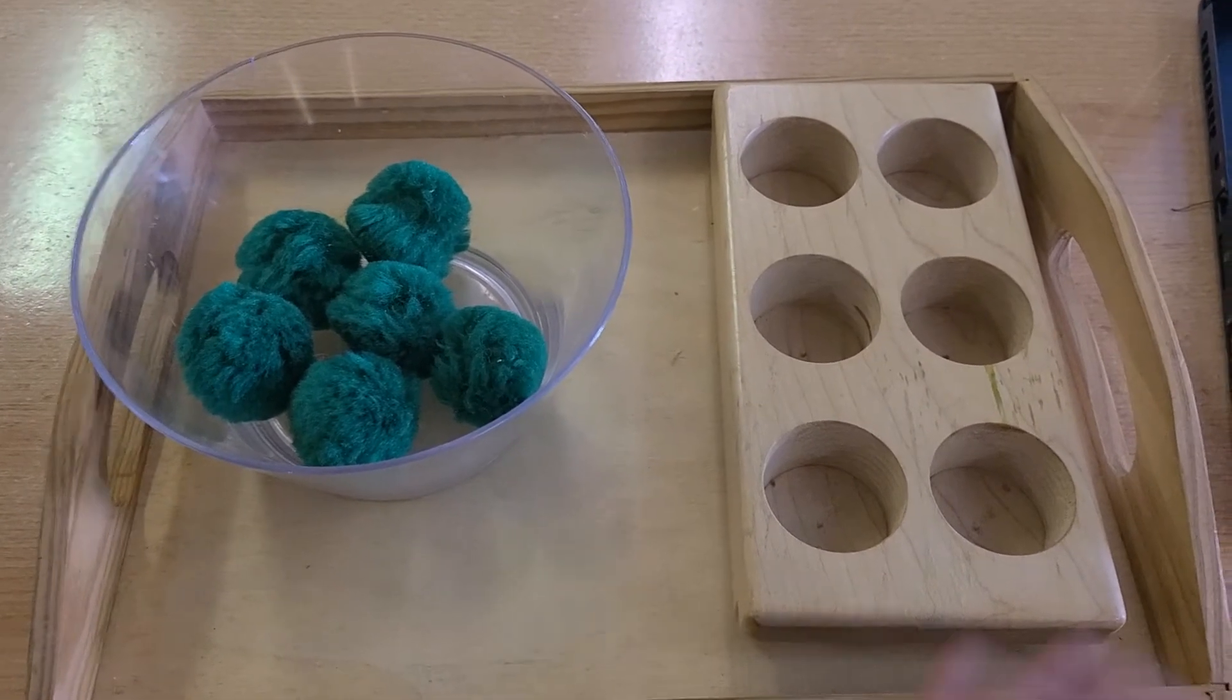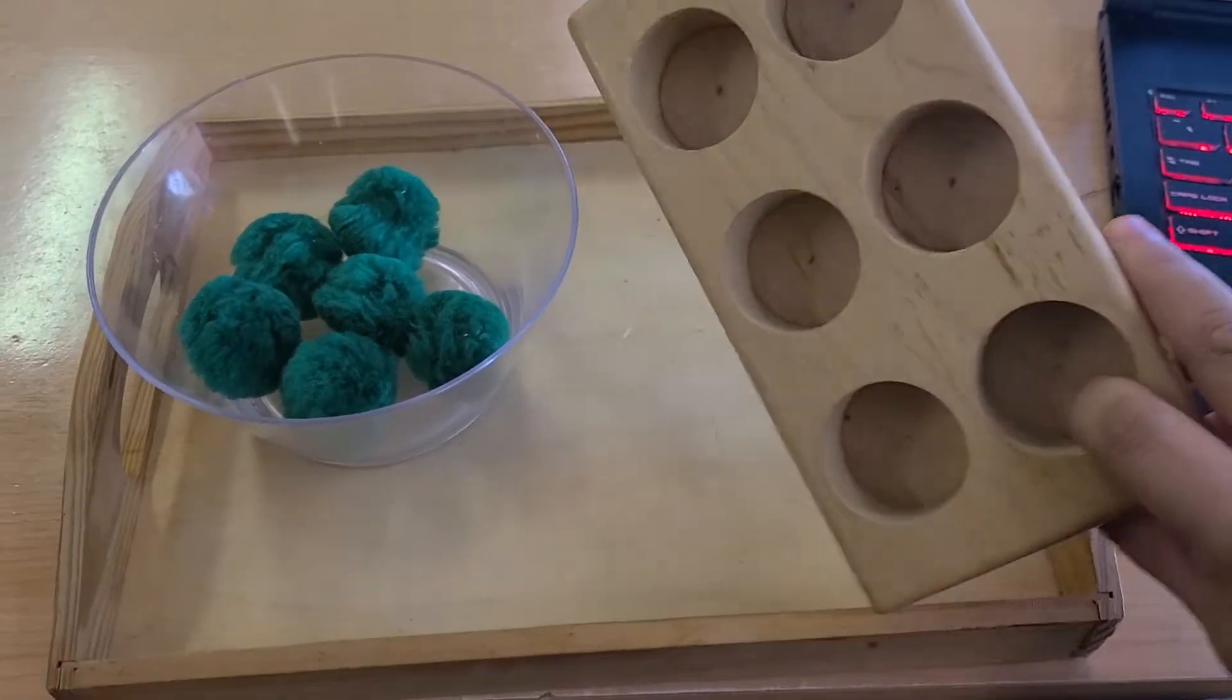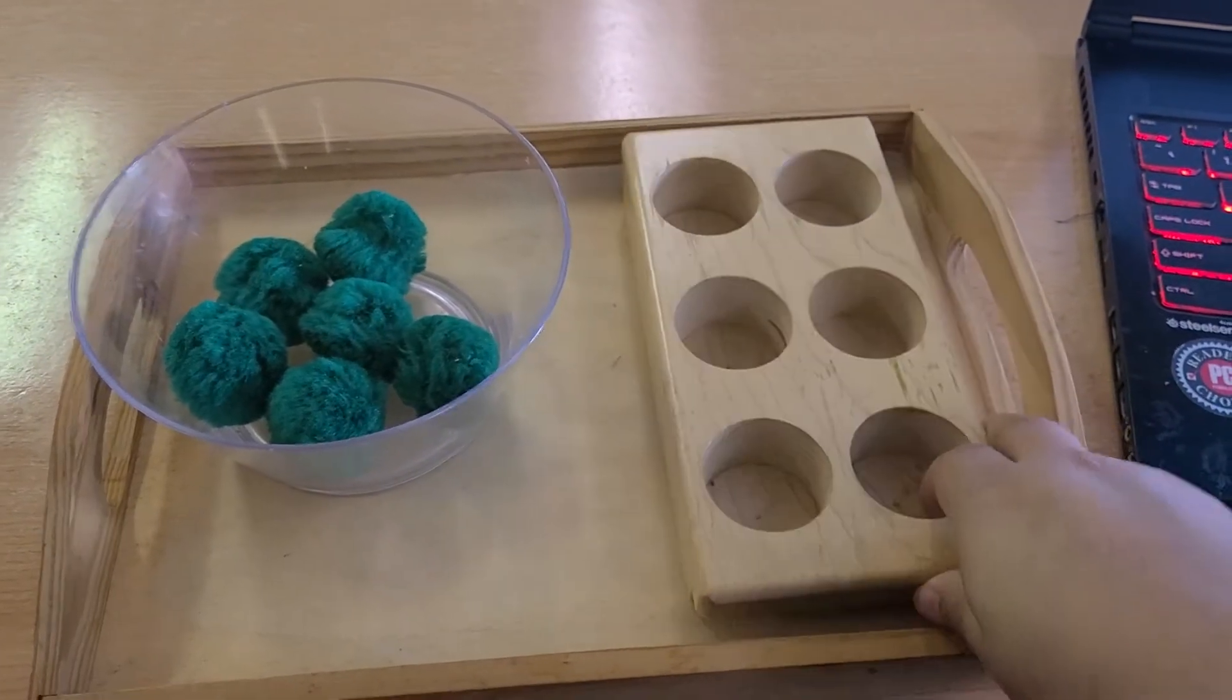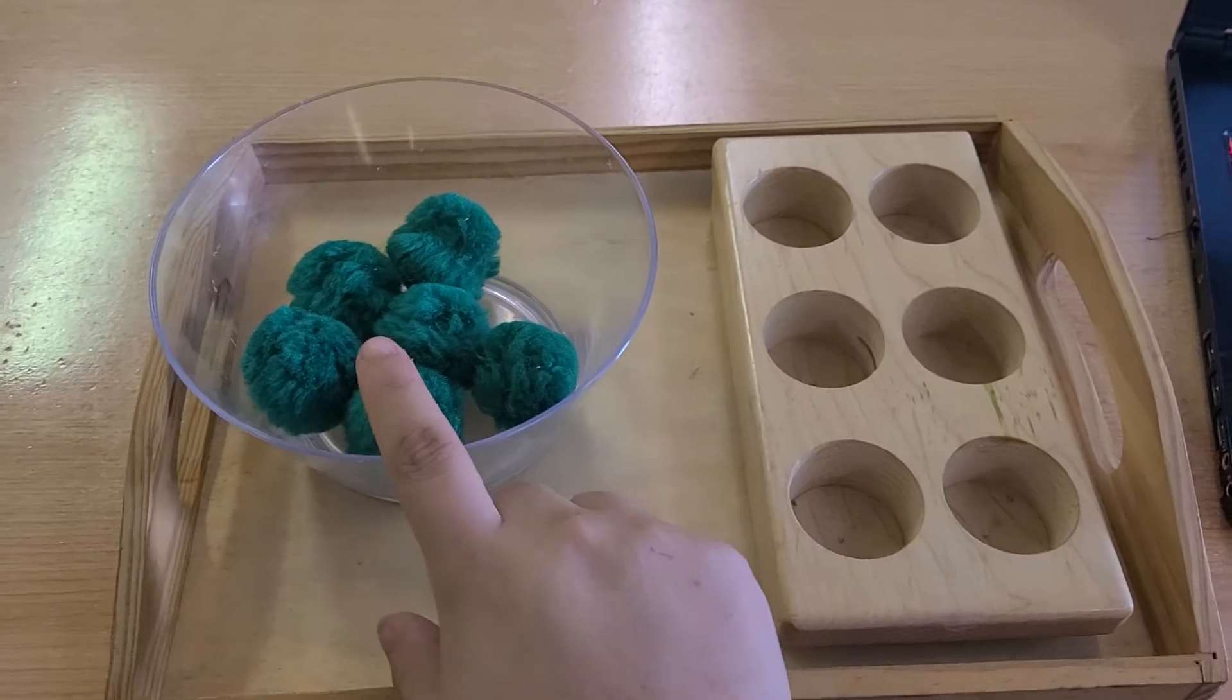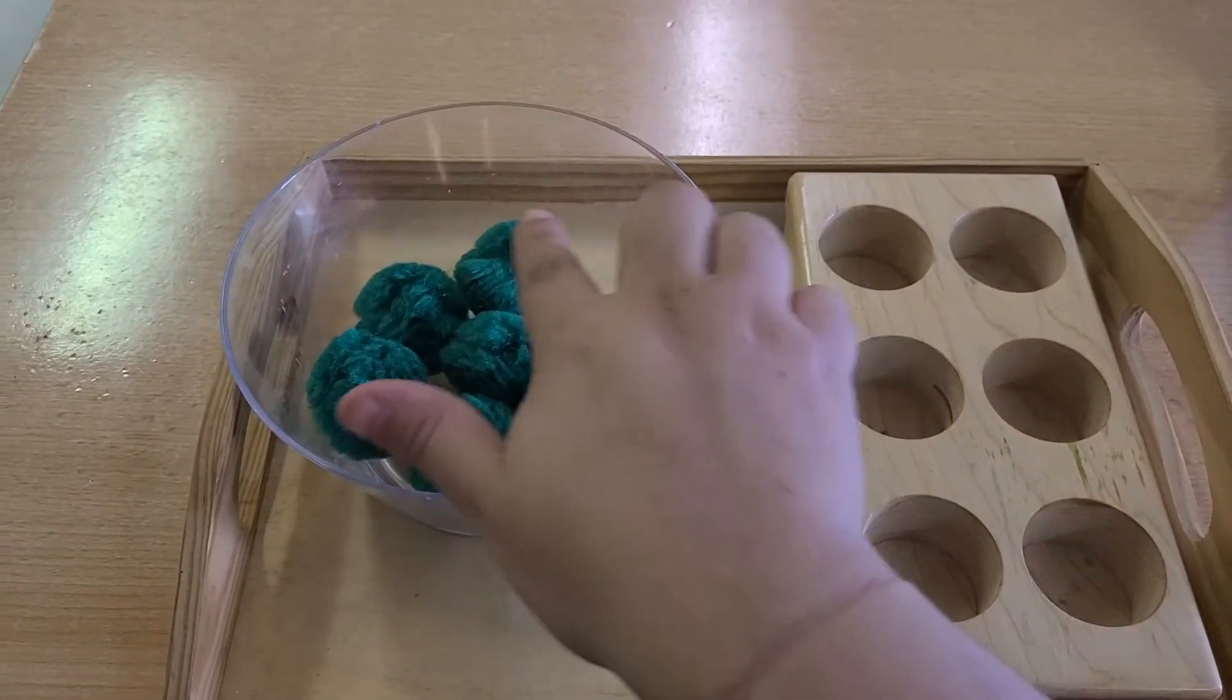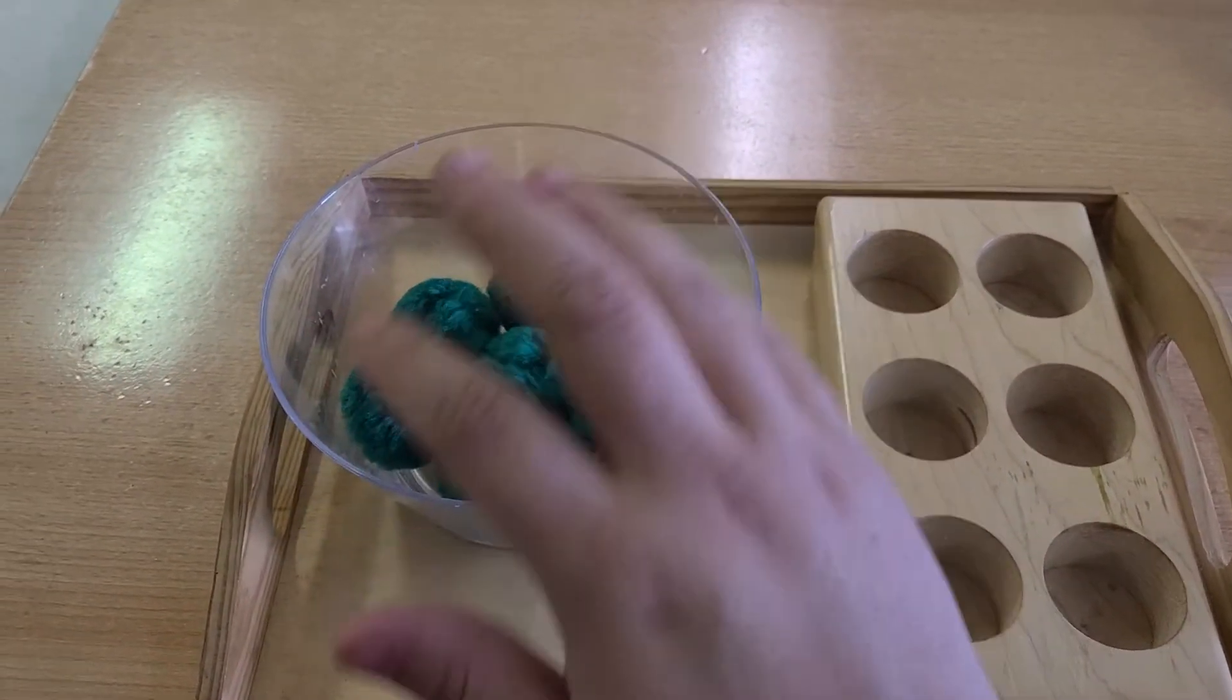In your materials you were asked to find some sort of compartment tray like this. It could be an ice cube tray, it could be a muffin tin, and when you find your materials they need to be the same uniform in color and shape.